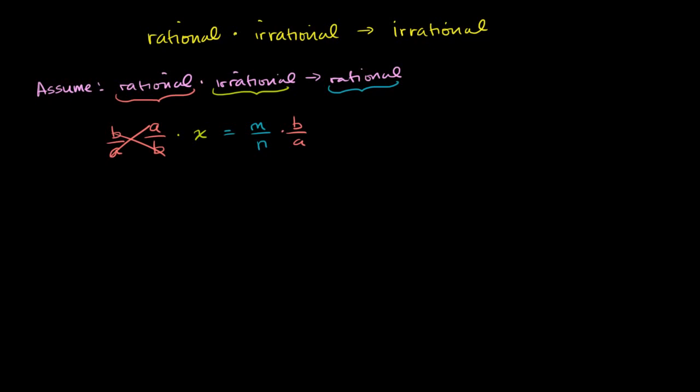We get our irrational number x being equal to m times b, or we could just write that as mb over na.